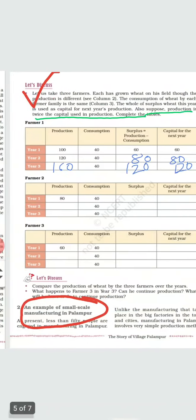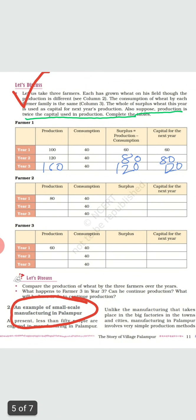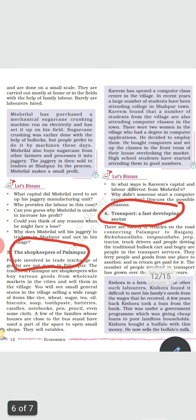The second non-farming activity is small-scale manufacturing. In the village, less than 50 people are engaged in this activity. It involves very simple production methods done on a very small scale. For example, Mishrilal purchased a mechanical sugarcane crushing machine and set it up in his field, and Karim has opened a computer class center in the village at a small level.